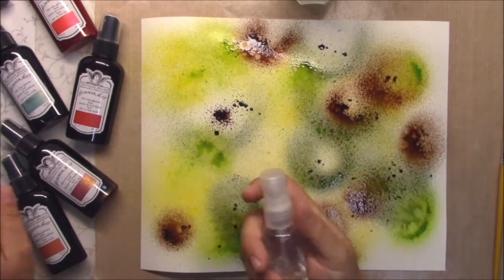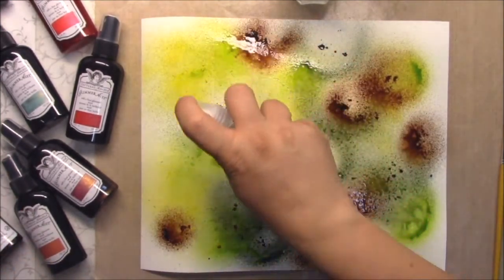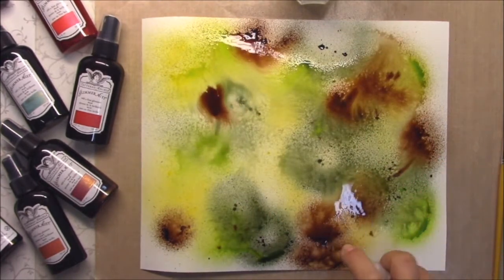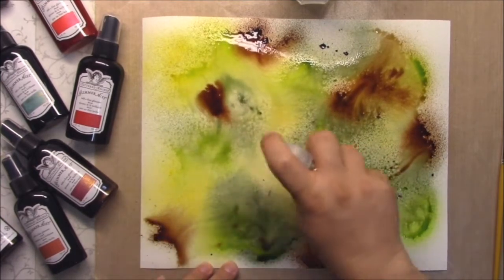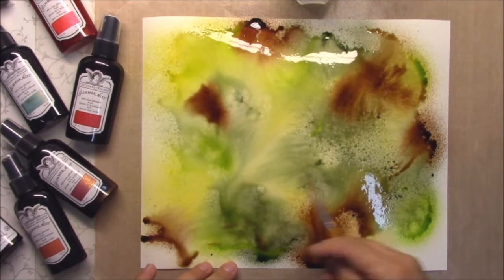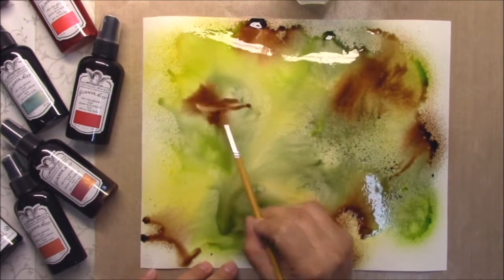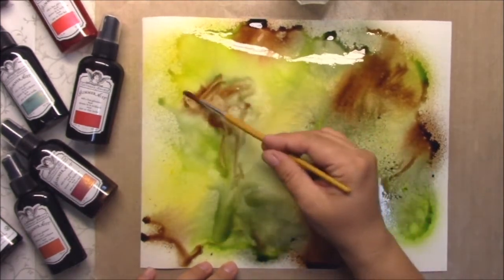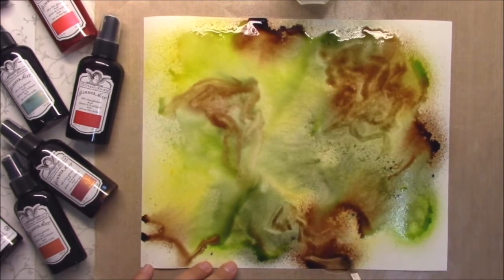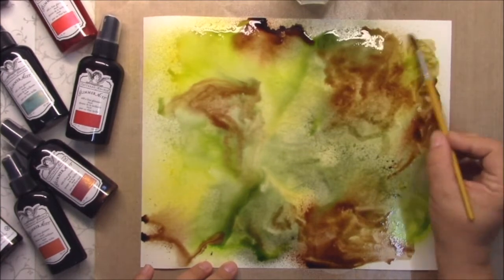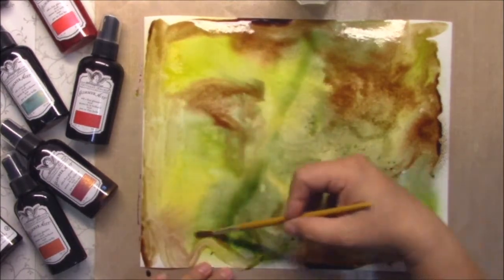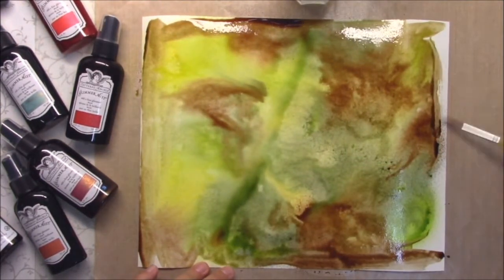So now I will take my water and I will spray it and color will start to move. If you don't like how it moves you can always take a brush and help water and color to spread. You can layer sprays, it's absolutely no problem, but be careful not to layer too much because then you can achieve really messy paper.